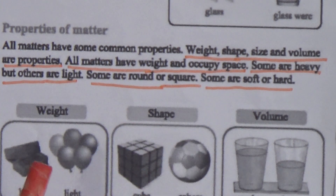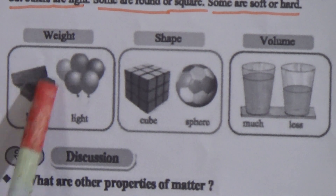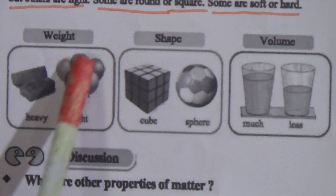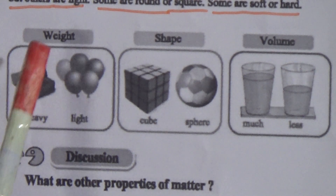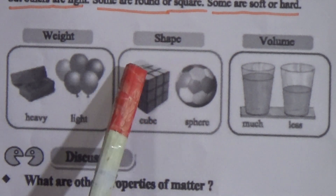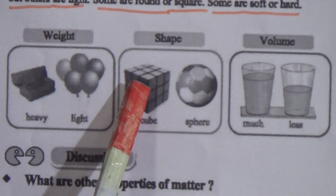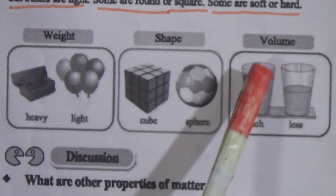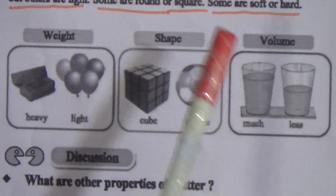See this figure — some matters are heavy and some are light. This is the figure of a balloon; a balloon is a light matter. And B is a heavy matter. Now, shape — some objects are cube and some are round, some are square. And volume — matters have a specific volume.